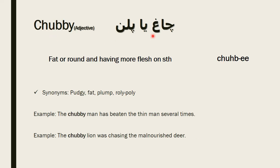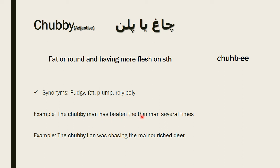The next word is chubby. According to functionality, this is also an adjective. The English meaning of chubby is fat, round, and having more flesh on something. Synonyms of chubby include plump, rotund, and pudgy.